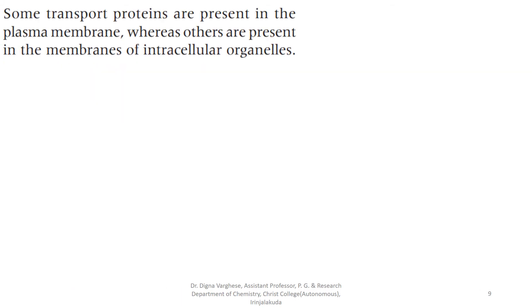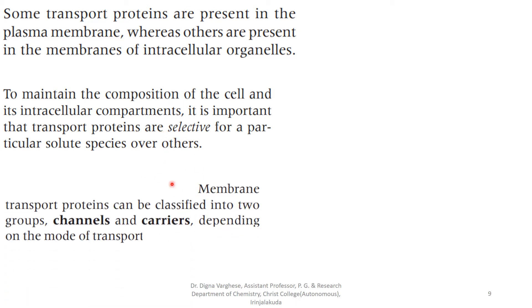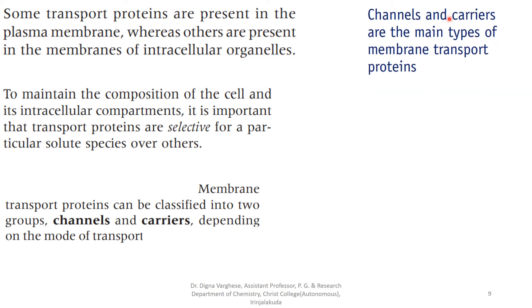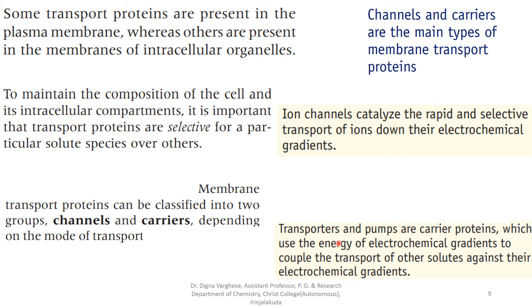Some transport proteins are present in the plasma membrane, whereas others are in the membranes of intracellular organelles. To maintain the composition of the cell and its intracellular compartments, transport proteins must be selective for a particular solute species. Membrane transport proteins are classified into two groups — channels and carriers — depending on the mode of transport. Ion channels catalyze the rapid and selective transport of ions down their electrochemical gradients. Transporters and pumps are carrier proteins which use the energy of electrochemical gradients to couple the transport of other solutes against their electrochemical gradient.